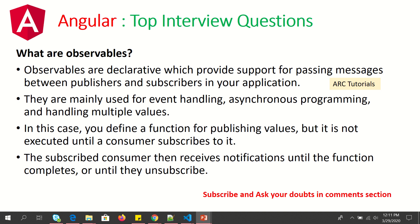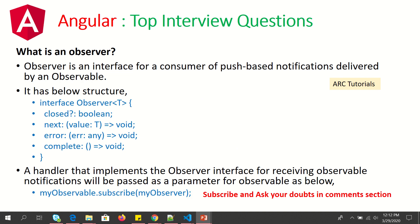Observables are declarative, providing support for passing messages between publishers and subscribers. They are mainly used for event handling, asynchronous programming, and handling multiple values. You define a function for publishing values, but it is not executed until a consumer subscribes to it. What is an observer? An observer is an interface for a consumer of push-based notifications delivered by an observable. It has four properties: closed, next, error, and complete. A handler implementing the observer interface is passed as a parameter to the observable and you can then subscribe to it.